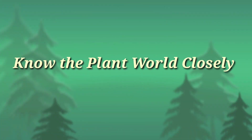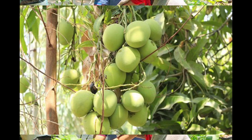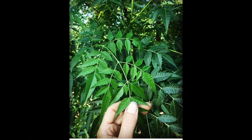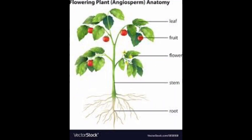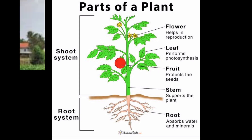Hi dears, today we are going to discuss the first unit of fifth standard basic science: knowing the plant world closely. There are different kinds of plants around us — we can see typical and medicinal plants, etc. We have already studied about different parts of plants. What are the different parts of plants? Yes: root, stem, leaf, flower, fruit, seed.